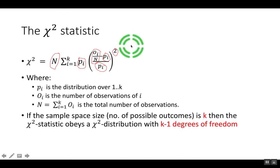If the sample space size is k, here we had k equals 5, then the chi-square statistic obeys a chi-square distribution with k minus 1 degrees of freedom. That's all I think you need to know in order to do the homework.